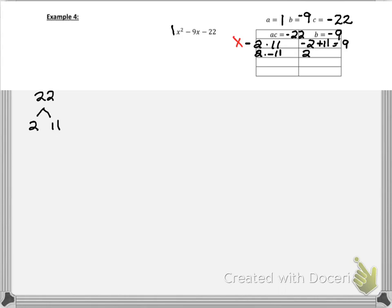So let's use the same numbers and switch the sign. Okay, this time I have 2 minus 11. And that gives me negative 9. So therefore, this is the correct answer.